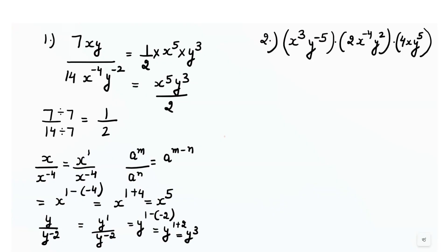Now let's work with question number 2. In question number 2, we don't have any numbers in the denominator — all numbers are in the numerator. So we have to multiply, using the rule of multiplication: a raised to power m times a raised to power n equals a raised to power m plus n.